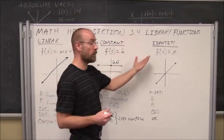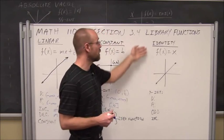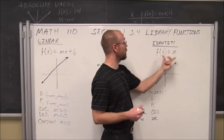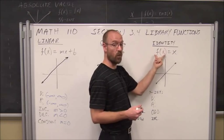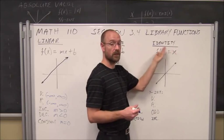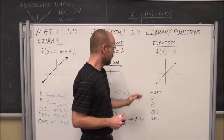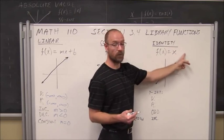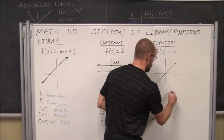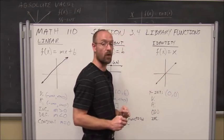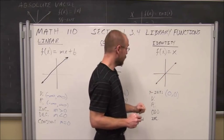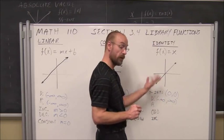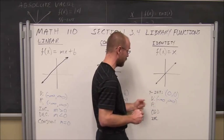The library function for linear equations is called the identity function. In non-function notation, this is y equals x — whatever value x is, it identifies what y is, so x and y are the same value. The slope equals 1, and the y-intercept is 0, so it passes through the origin. Its domain, just like linear functions, is from negative infinity to positive infinity, and its range is also negative infinity to positive infinity.